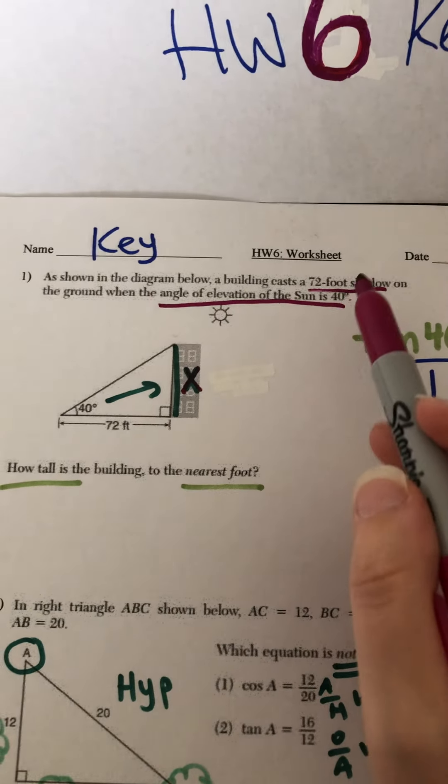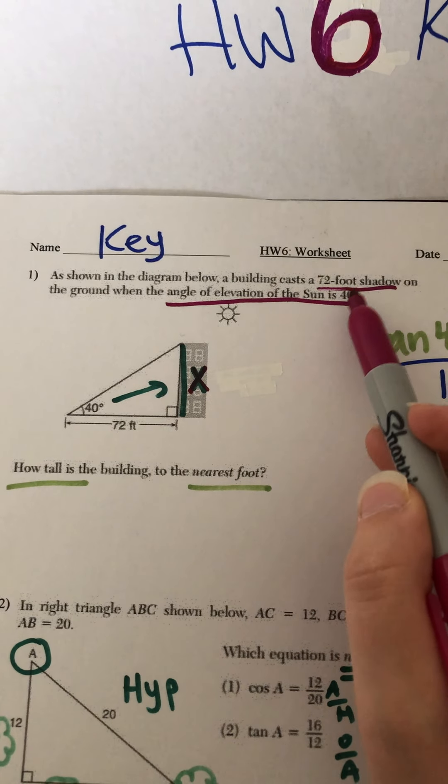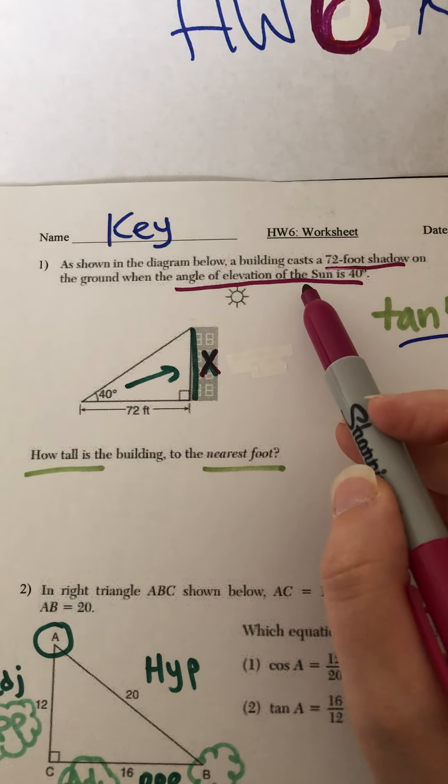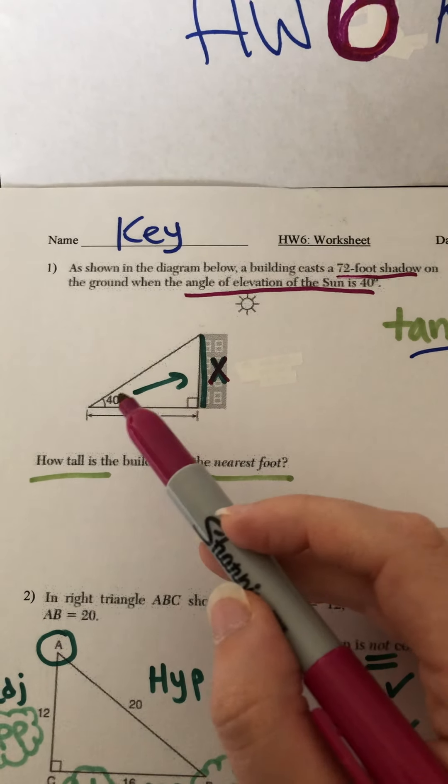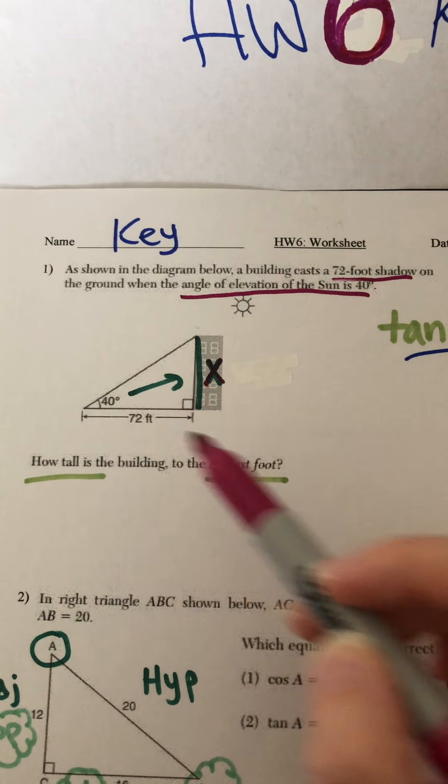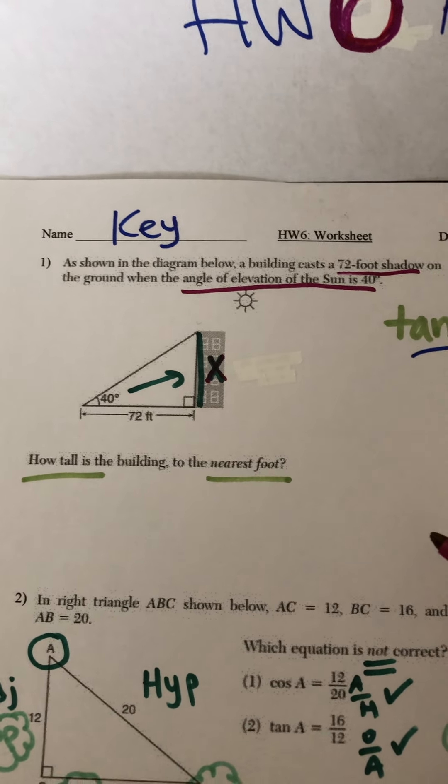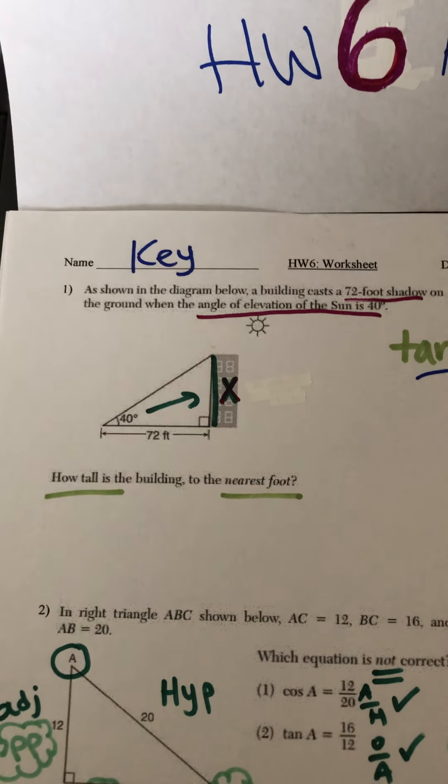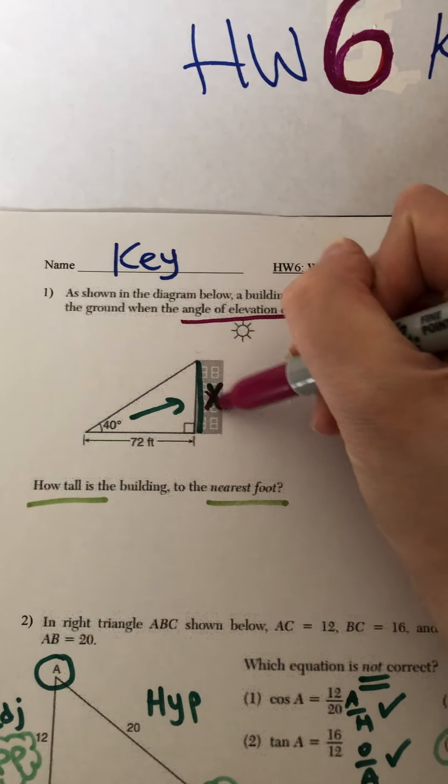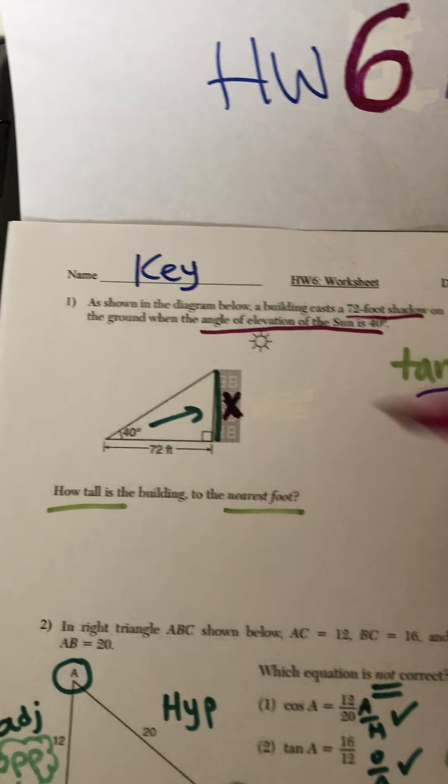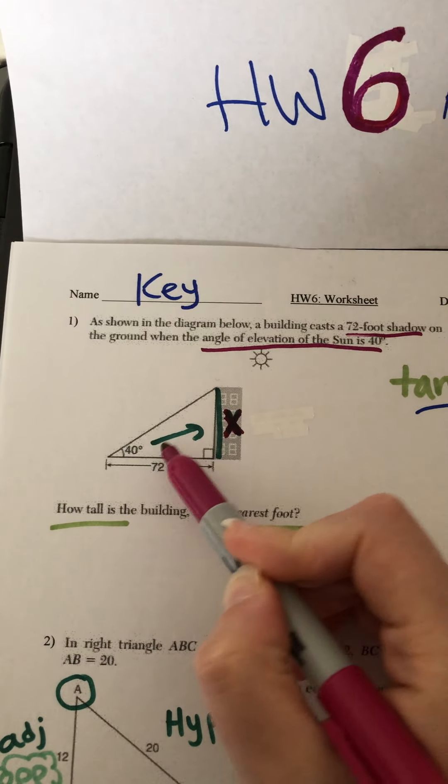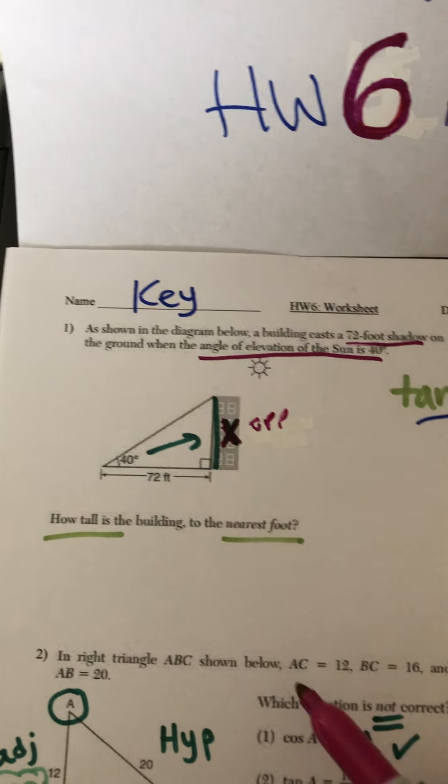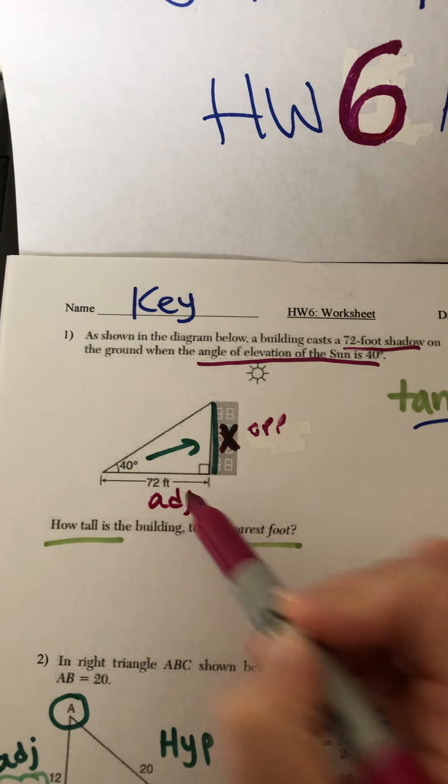If you look at question one, there's some details in the question, the 72 foot shadow and the angle of elevation of the sun, which is 40 degrees. But what's great is those things are already labeled on the diagram. The part that we have to figure out is how tall is the building to nearest foot. How tall is the building means the x goes onto the height of the building right there. That is across from the 40 degrees, so that's the opposite side. And then the 72 is adjacent.